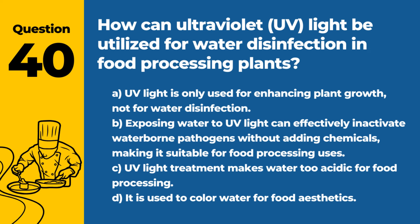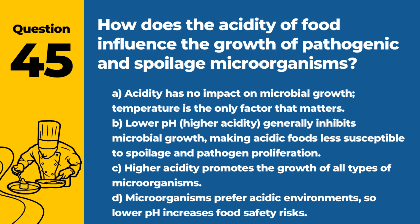Question 45. How does the acidity of food influence the growth of pathogenic and spoilage microorganisms? a. Acidity has no impact on microbial growth; temperature is the only factor that matters. b. Lower pH (higher acidity) generally inhibits microbial growth, making acidic foods less susceptible to spoilage and pathogen proliferation. c. Higher acidity promotes the growth of all types of microorganisms. d. Microorganisms prefer acidic environments, so lower pH increases food safety risks. Answer: b. Lower pH (higher acidity) generally inhibits microbial growth, making acidic foods less susceptible to spoilage and pathogen proliferation. Acidity is a natural barrier to many pathogens and spoilage organisms.